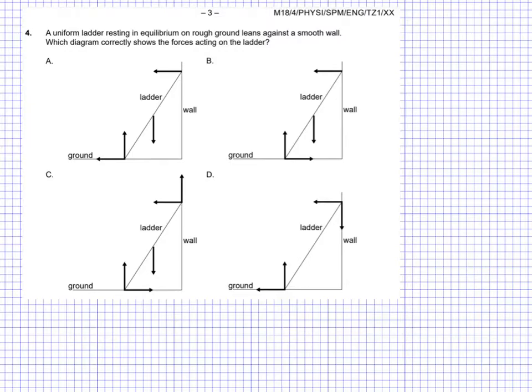Well, I'm not entirely sure what a uniform ladder is, but I'll just assume that it means a normal ladder. Here are some diagrams of it resting against a wall, and our job is to figure out which way the vector arrows correctly represent forces acting on the ladder. That's really important — it's not the ladder acting on the wall or the ground, it's the forces acting on the ladder.